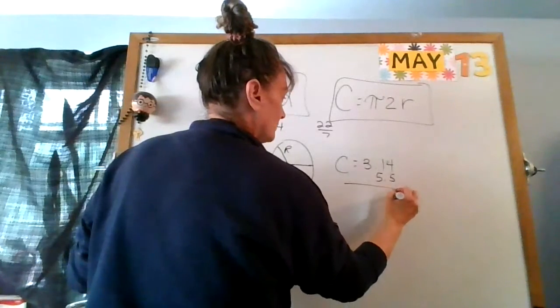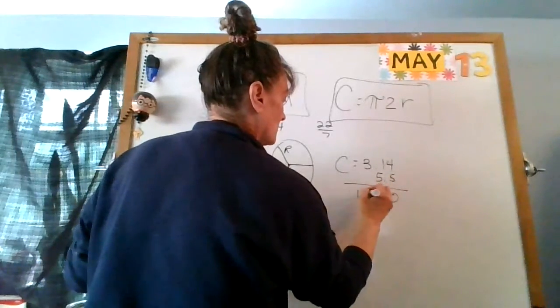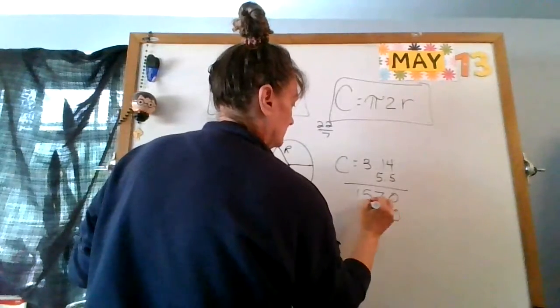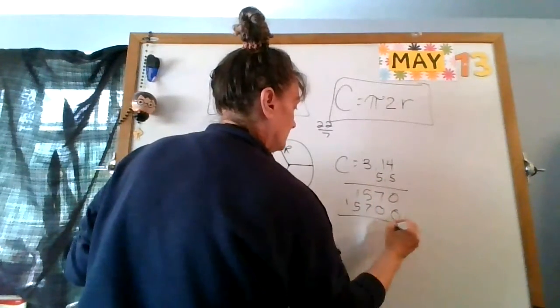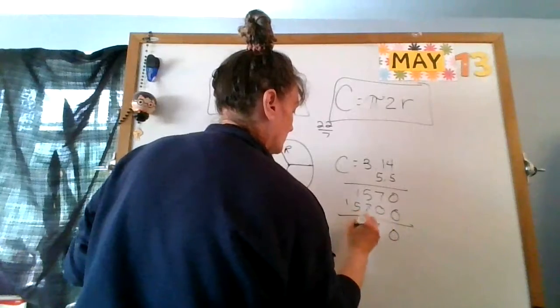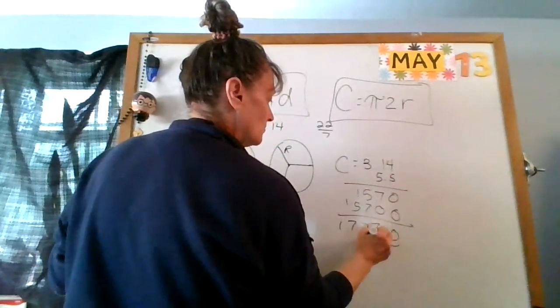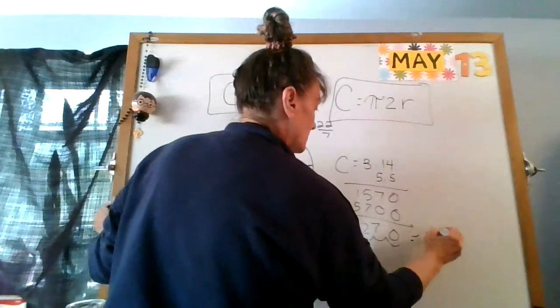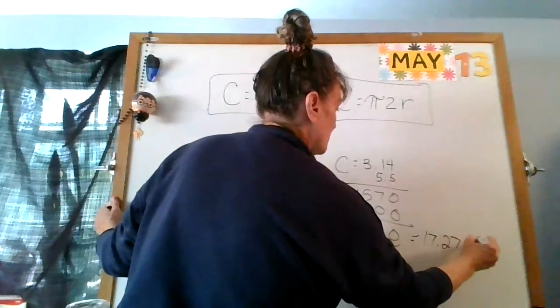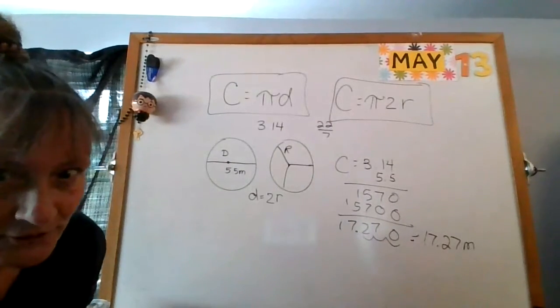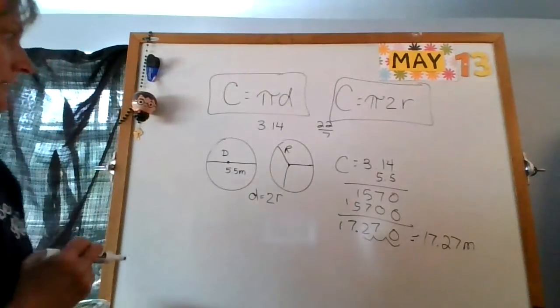I'm going to do 3.14, pi times diameter, times 5.5. Multiply it out. I get one two three behind, one two three behind, so it's going to equal 17.27 meters.